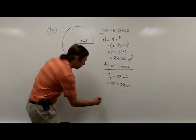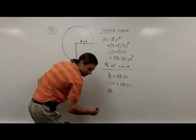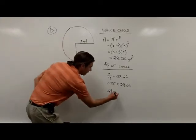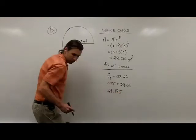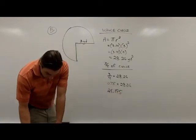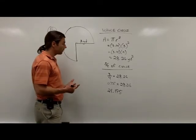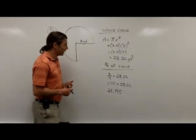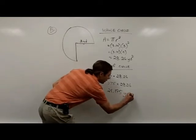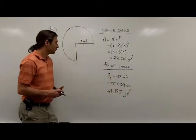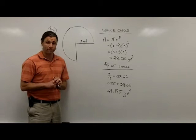So I'm going to take this 0.75 and multiply that times 28.26. I get as my answer here, I get 21.195. The instructions just say to find the area, so that's an exact answer. We don't need to round in this case. So 21.195 square yards, because we're finding area.